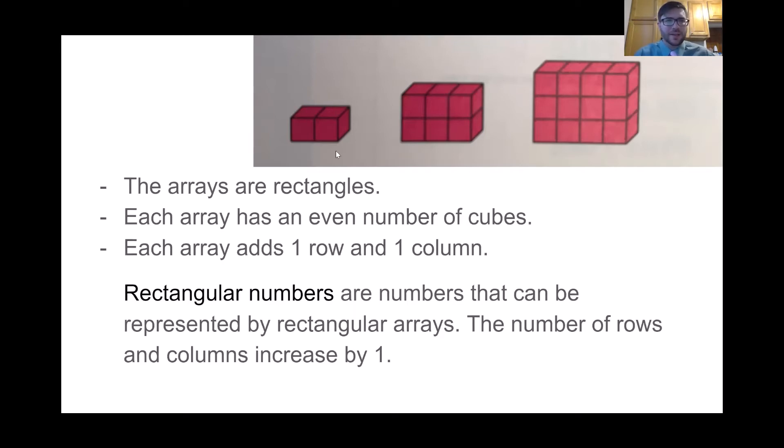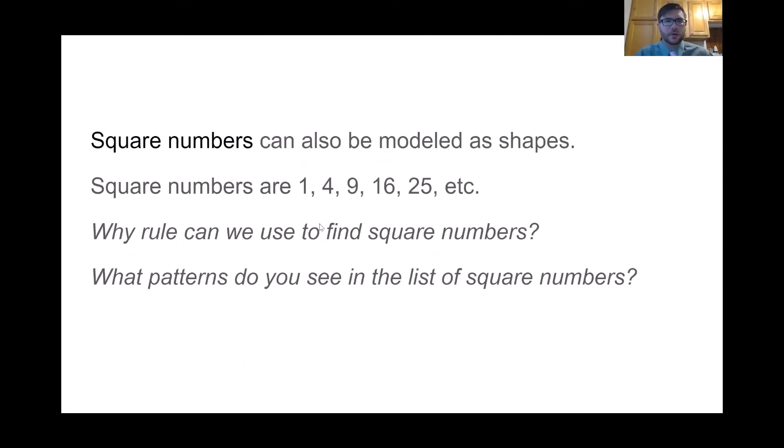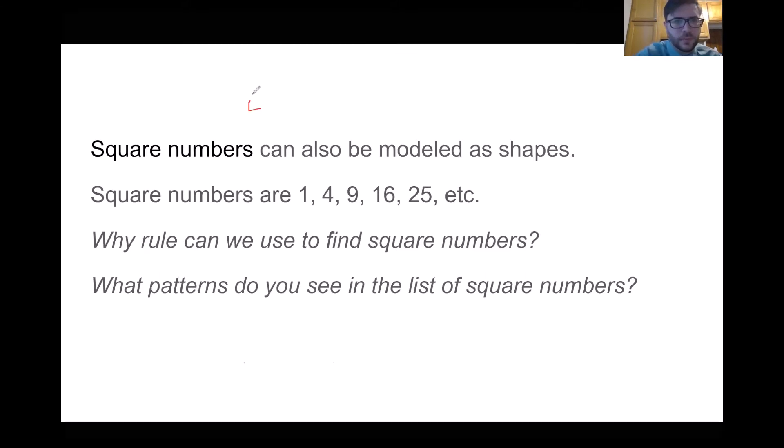You may have been thinking these sound very similar to square numbers and you would be correct. They act and are similar to square numbers, but these are rectangular numbers. So square models can also be modeled as shapes. So if we were to look at some of this, we started out with one, then we'd go to four, nine... So see square numbers have similar patterns and can be drawn with shapes. Just pretend like those squares are perfect up there.